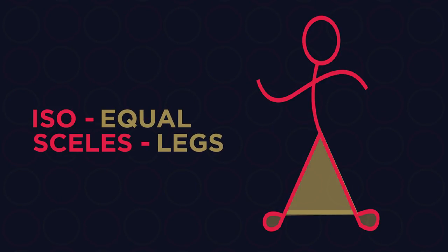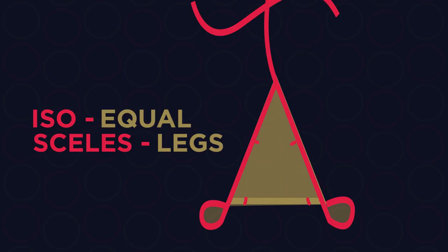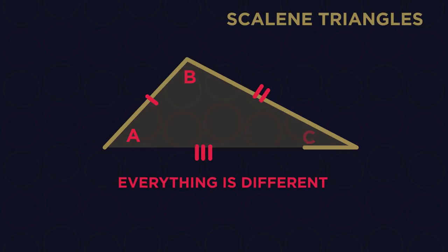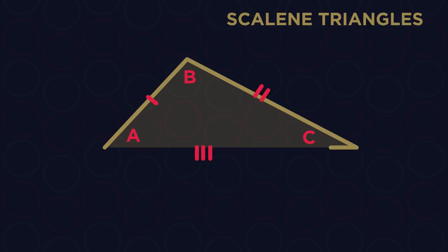And so isosceles triangles have two sides and two angles the same because we have two legs. So then all you need to remember is that in scalene triangles everything is different.